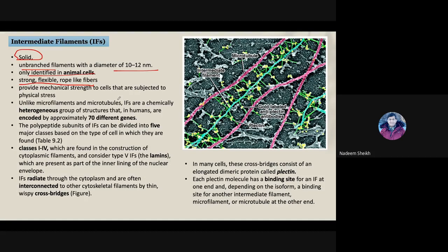Intermediate filaments make the cell able to withstand physical stress that can be applied from the external environment. If we compare to microtubules or microfilaments, intermediate filaments are a heterogeneous group of structures. Microtubules are made up of dimers of alpha and beta tubulin, whereas intermediate filaments have a variable composition.